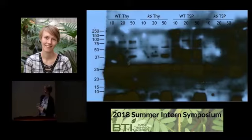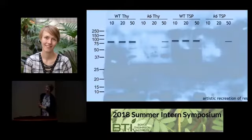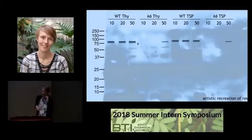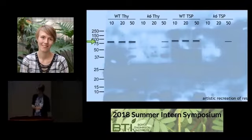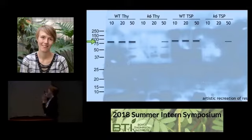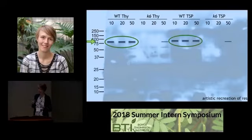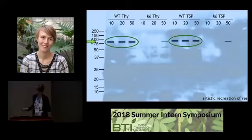For your viewing pleasure, I've artistically recreated the bands present on the film. I have the film with me today, so if anyone doubts these results, I'd be more than happy to take the film up to the light. We know to expect the K6 bands at 87 kilodaltons. And in this blot — I've even circled it — there's great dark signal from the wild-type thylakoid samples and also the wild-type total soluble protein samples. This means we don't have to extract from plastoglobules to check for K6 protein in a sample. Amazing.